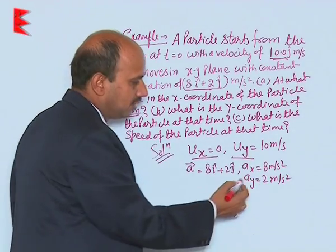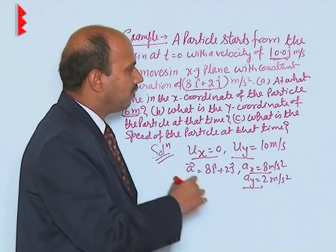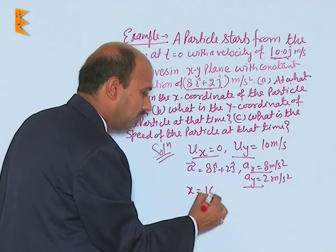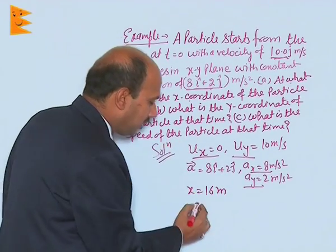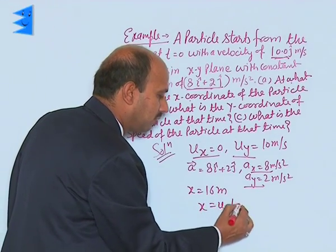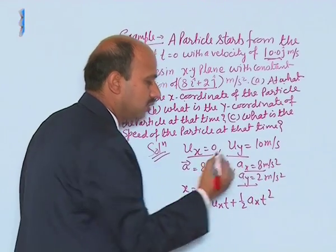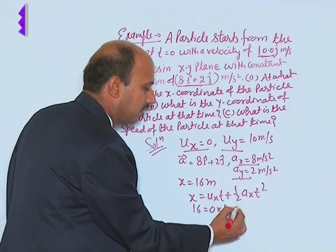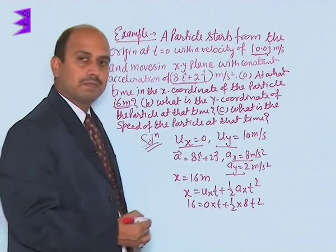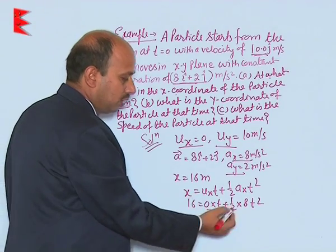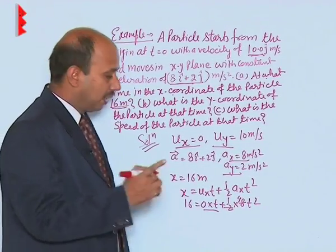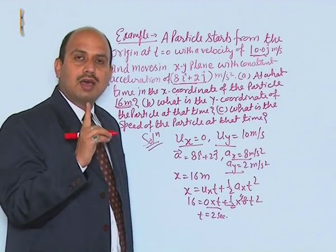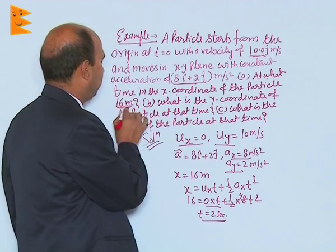For the first part — at what time is the x-coordinate equal to 16 meters — we apply the equation x = u_x·t + ½·A_x·t². Substituting: 16 = 0·t + ½·8·t², which gives 16 = 4t². Solving, t = 2 seconds. So at t = 2 seconds, the x-coordinate is 16 meters.